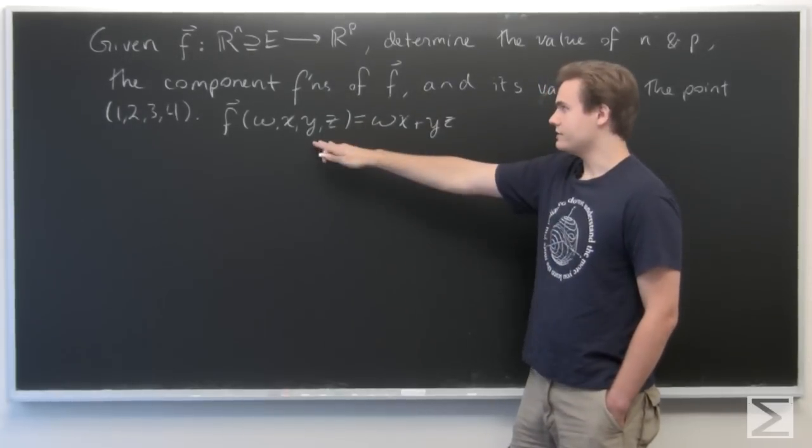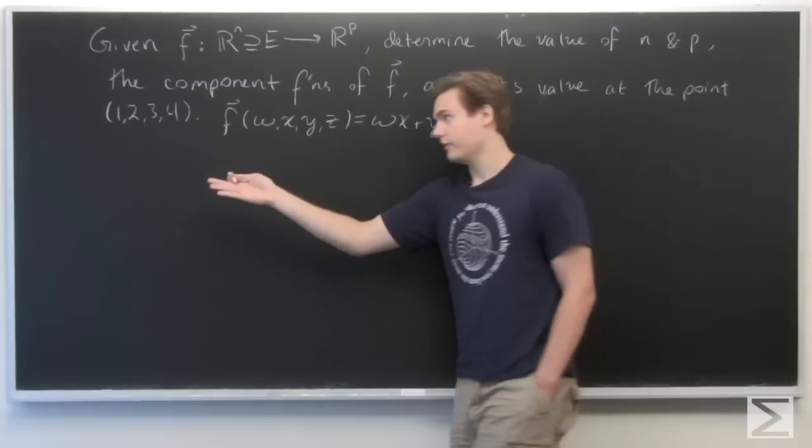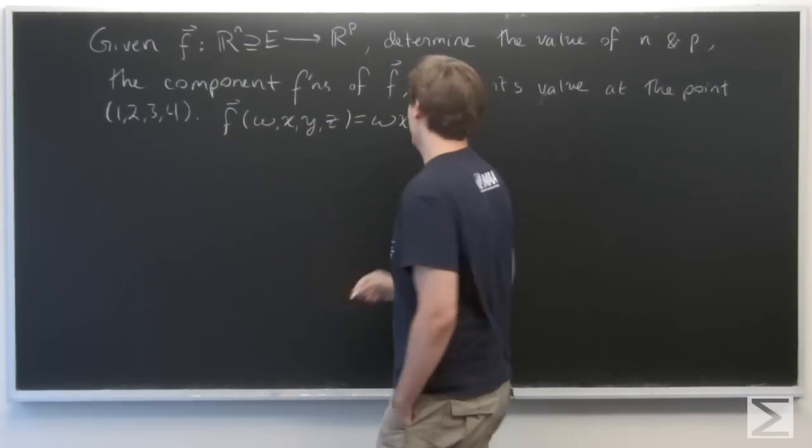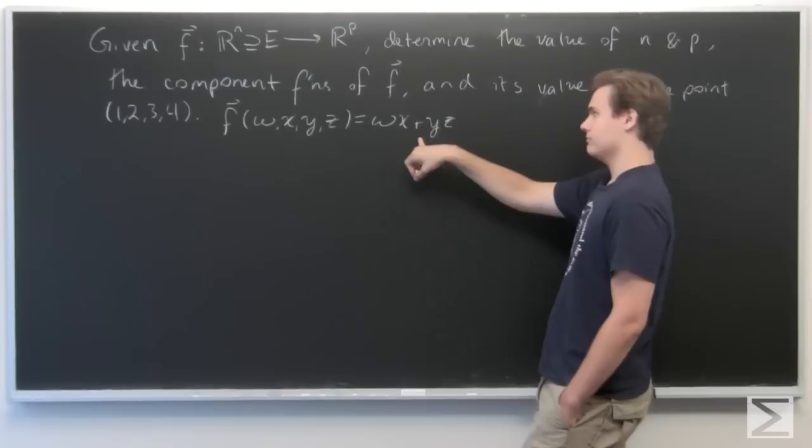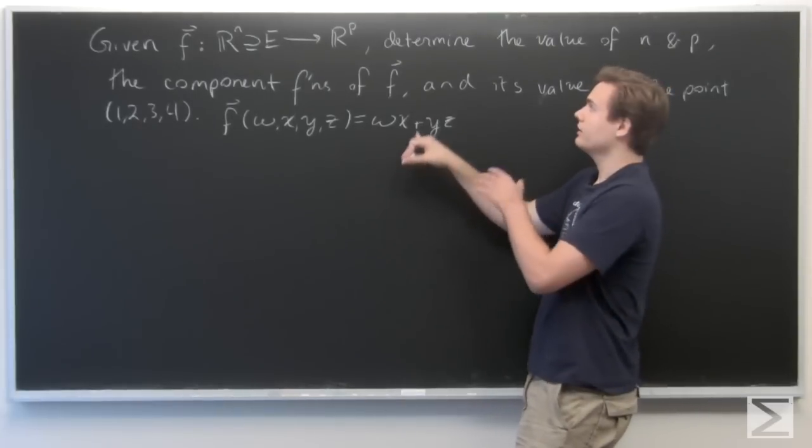Right away, we can see that since we have four inputs, four variables, n is going to be equal to 4. And since it gives us a real number at the end, we see that p is 1.